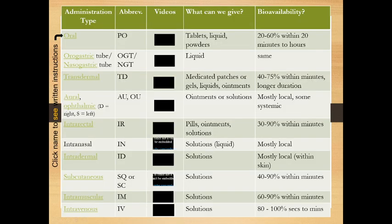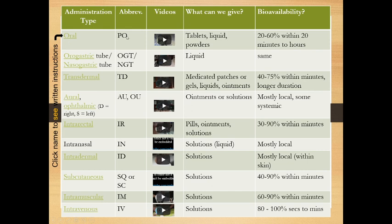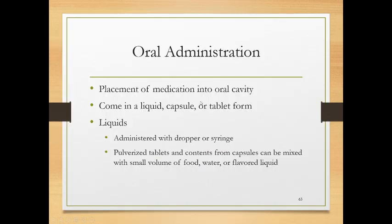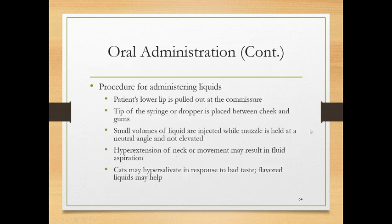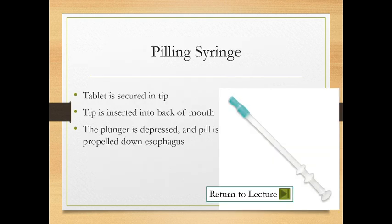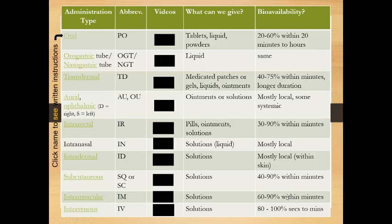This slide should be the most helpful for you, but you need to download the lecture and put it in presentation mode to see it. Clicking on colored, underlined items — for example 'oral,' abbreviated PO or per os, which is Latin — will give you an explanation and definition. You can view administration procedures, and there's a pilling syringe we can use if an animal is a biter so we don't put our fingers in the mouth. Press the back button to return to the slide.